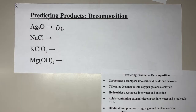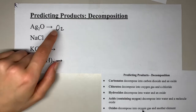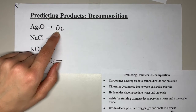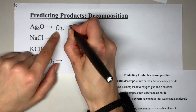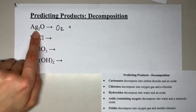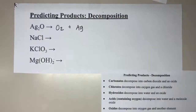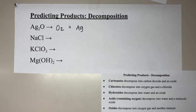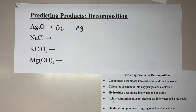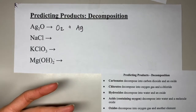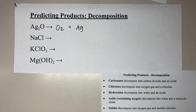We're breaking it down into oxygen gas and another element. The other element in our reactant is silver, and that is going to be our other product. Silver is not diatomic, which is why we leave it as Ag. We would need to balance that, but we are not focusing on balancing right now — just predicting products. Those are the products for that decomposition reaction.